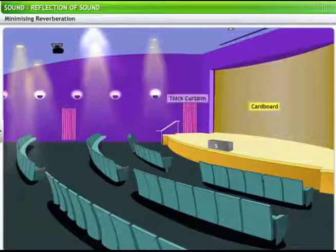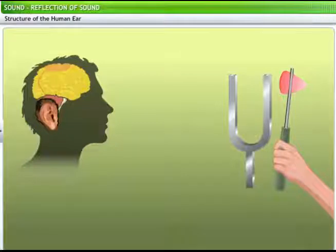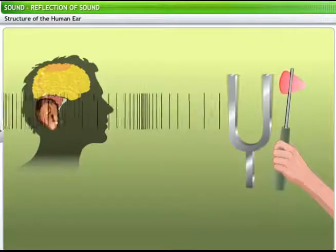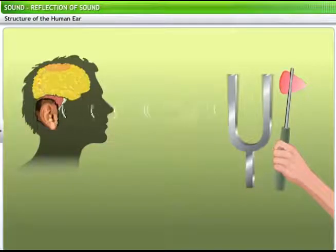Reverberation is generally minimized in auditoriums by covering the walls, the ceiling, and the flooring using sound absorbent materials like cardboard, thick curtains, and fiber. Sound as a concept would not exist for us if we could not hear it, right? Therefore, an explanation of the reflection of sound is incomplete without a look at the mechanism that enables us to hear: the human ear. The ear converts audible sound waves in air into electric impulses that reach the brain, enabling us to hear. Here, you can see the structure of the human ear.